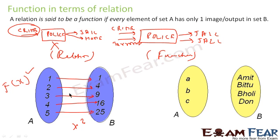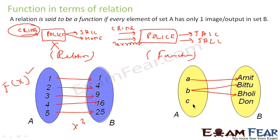This is a function because for every input we give only one output. Now consider a relation where the element on the right should start with the same letter: A points to Amit, B points to Bittoo, but B can also point to Bolli. For the same input B there are two outputs — Bittoo and Bolli — so this is not a function.